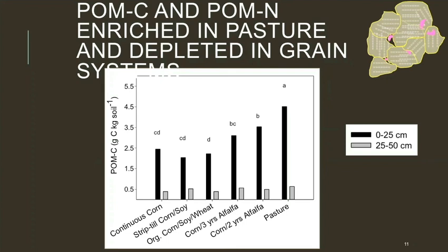First, I'm going to talk about the particulate organic matter — the little pink blobs in my cartoon — which represents the most recent input to the soil. You can see the systems along the bottom axis and the POM carbon concentration on the y-axis. Only the 0 to 25 centimeter depth shows significant differences among systems. What jumps out right away is that the forage systems have higher POM carbon and nitrogen, while the annual grain systems have less. We can explain that through tillage: annual tillage increases aeration of the soil and increases microbial access to the POM, decomposing it faster.